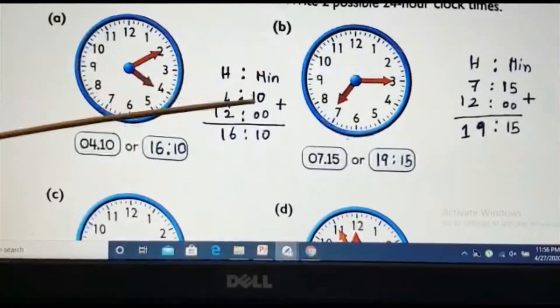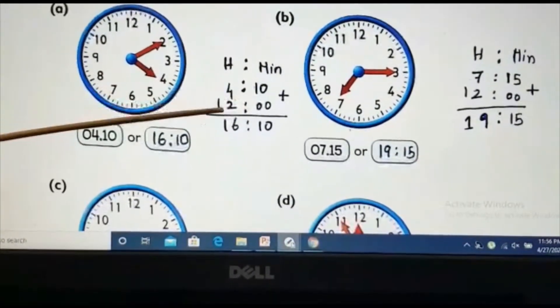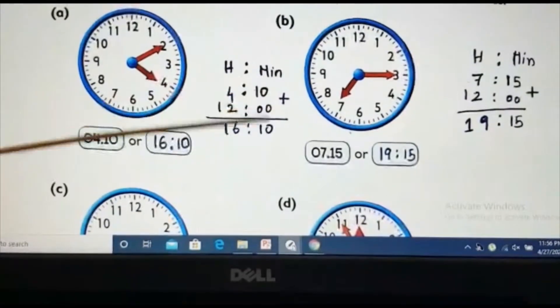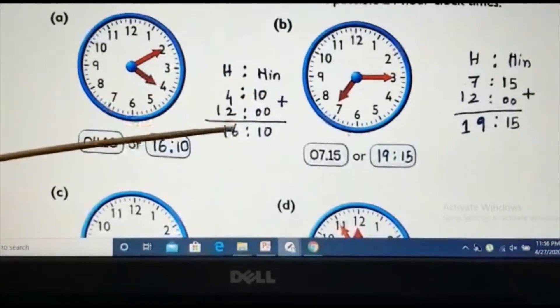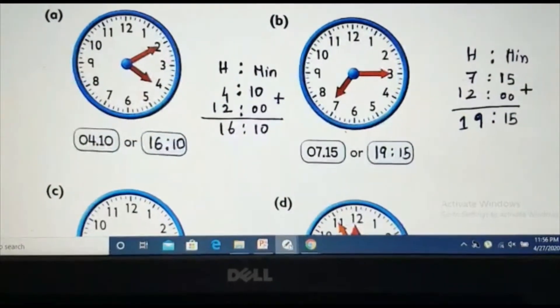Is it clear? Minutes, I am not adding anything because always I am adding 12, then two zeros. So, 10 plus 00 is 10 itself. Then 4 plus 2 is 6. Here, nothing is this. So, 16:10. Okay.